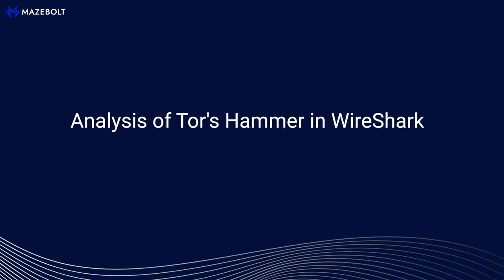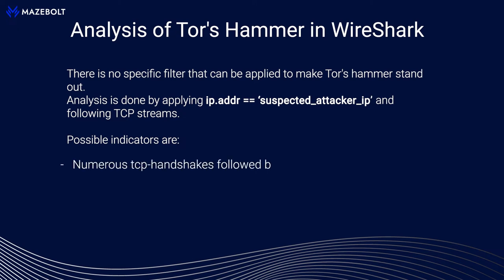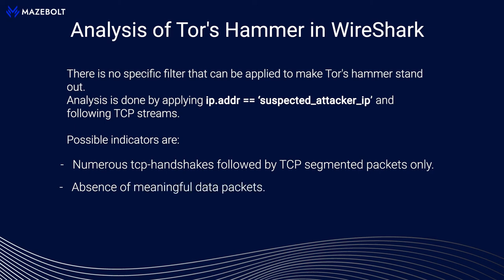Analysis of Tor's Hammer in Wireshark. There is no specific filter that can be applied to make Tor's Hammer stand out. Analysis is done by applying IP.address == suspected attacker IP and following TCP streams. Possible indicators are: numerous TCP handshakes followed by TCP segmented packets only, absence of meaningful data packets, and absence of FIN packets.